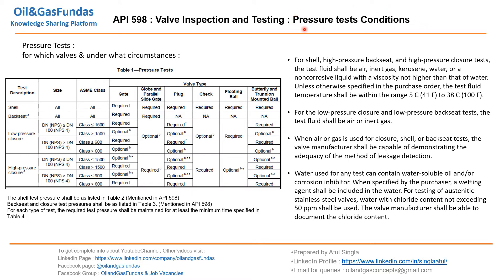Let us look at a few more pressure test conditions which need to be taken care of while performing the test. These are the clauses given in API 598. For shell high pressure, backseat, and closure tests, the test fluid shall be air, inert gas, kerosene, water, or a non-corrosive liquid with viscosity not higher than water.